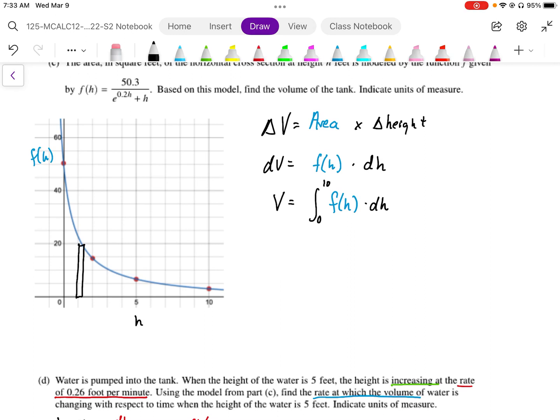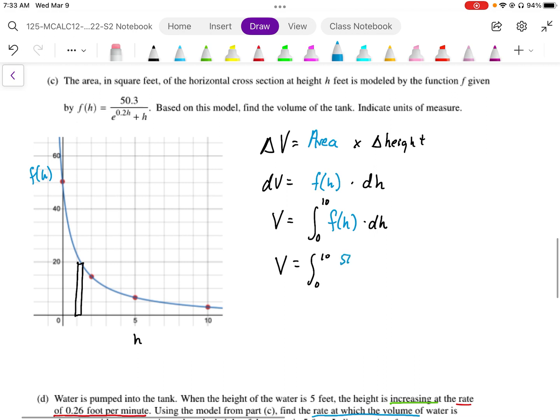So then we can do this. We can plug this in. We have V equals the integral from 0 to 10 of, the function was 50.3 over e to the 0.2h plus h.